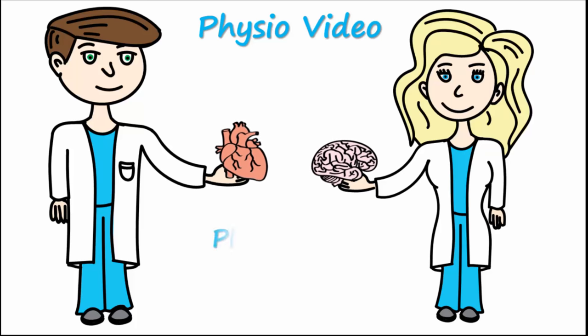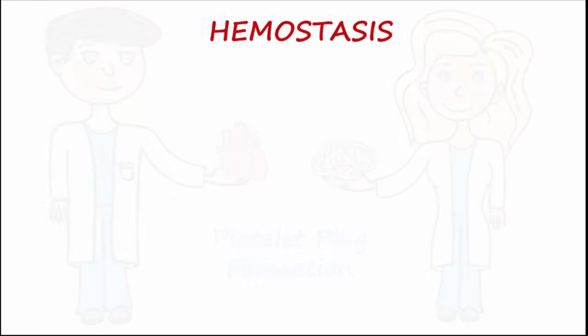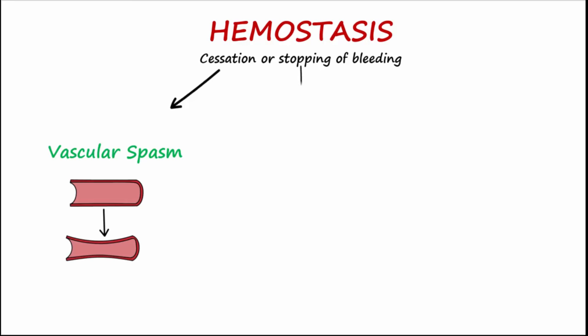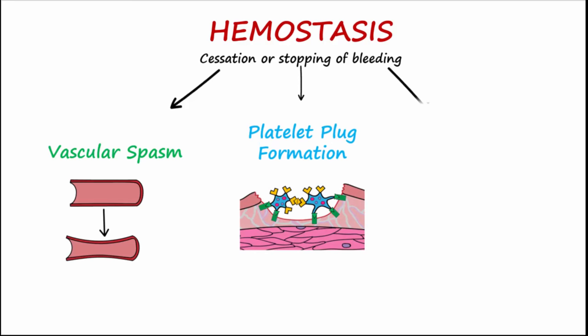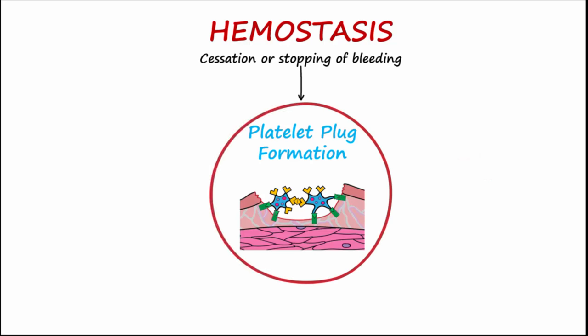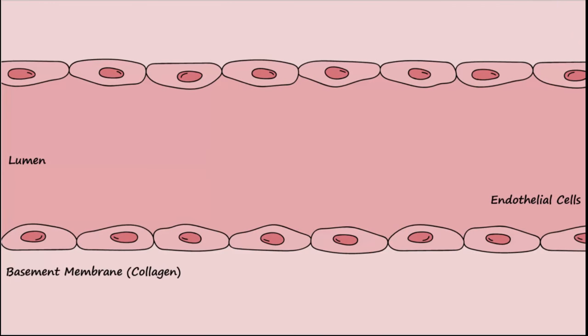Our topic today is platelet plug formation. Hemostasis, or the cessation of bleeding, is critical for survival. Hemostasis can be divided into three steps: vascular spasm, platelet plug formation, and blood clot formation. This video discusses the development of the platelet plug, which is a plug made of platelets sticking to one another to stop blood flow.